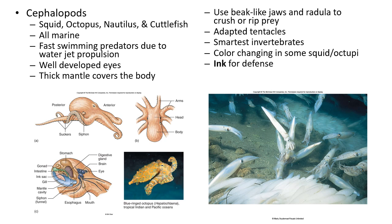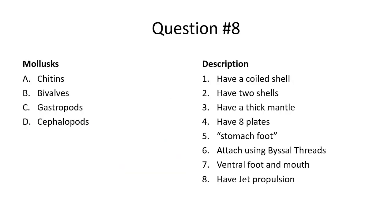Cephalopods can be very smart, like the octopus, and also include nautilus, cuttlefish, and squid. All are marine. They have jet propulsion — sucking in water and pushing it out in a specific direction. They have a thick mantle covering their body but no shell, at least in octopi. They have beak-like jaws to crush prey, tentacles with suction cups, and ink for defense. Question eight is a matching question: match the description with the four different groups of mollusks.